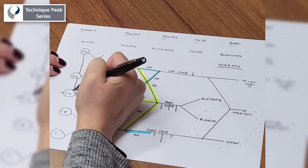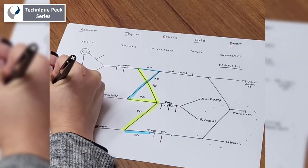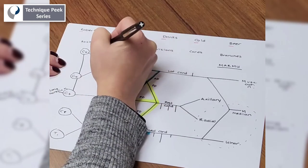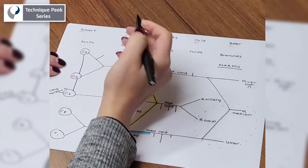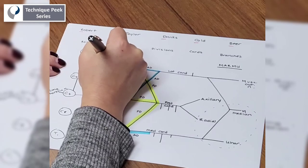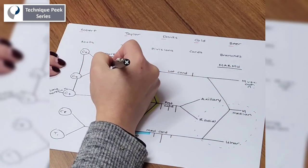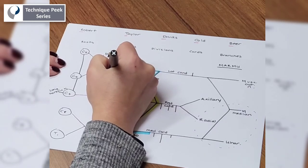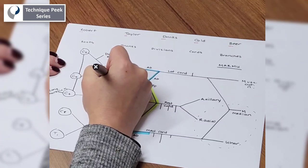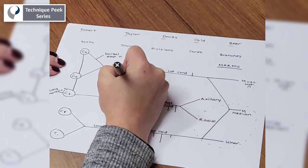So this one's easy to remember because it's nice and long. So that's going to be our long thoracic nerve. And then this one, I remember because it looks like the dorsal fin of a shark. So that's going to be our dorsal scapular nerve. And then off of this upper trunk, there are going to be S's. Suprascapular. And then the subclavius.